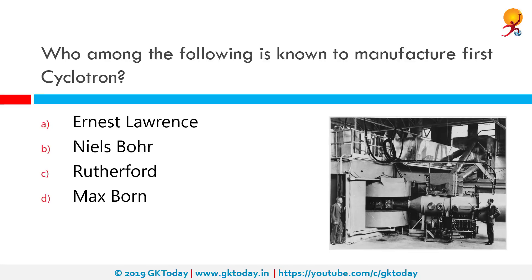Who among the following is known to have manufactured the first cyclotron? That would be Ernest Lawrence. A cyclotron is a type of particle accelerator invented by Ernest Lawrence in 1929-30 at the University of California, Berkeley, and patented in 1932. A cyclotron accelerates charged particles outwards from the center along a spiral path.